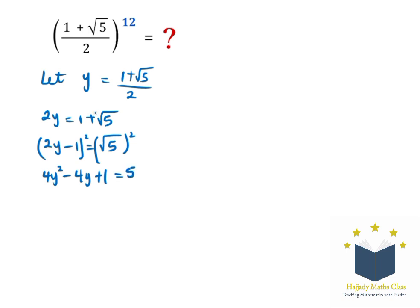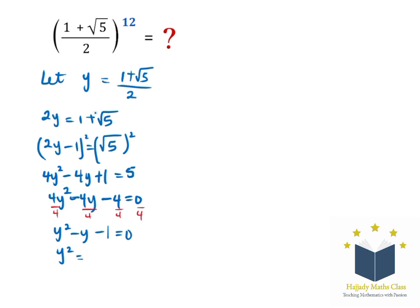The square root cancels out, so we have 4y² minus 4y plus 1 equals 5. Bringing 5 to the left-hand side gives 4y² minus 4y minus 4 equals 0. Dividing both sides by 4, we get y² minus y minus 1 equals 0. Making y² the subject gives us y² equals y plus 1.